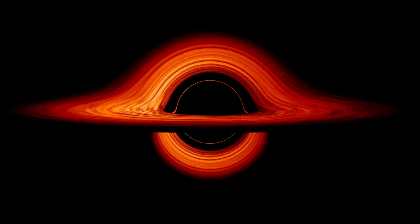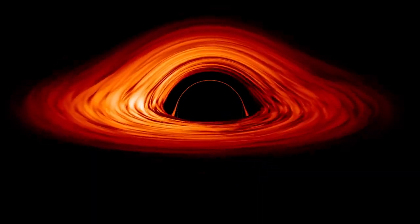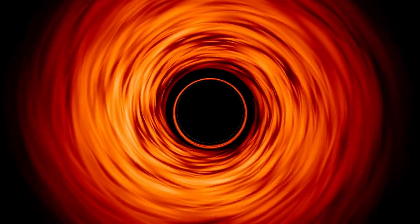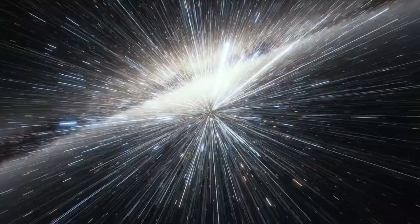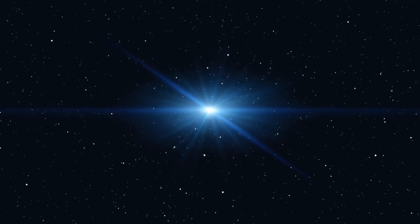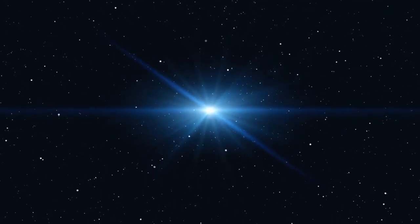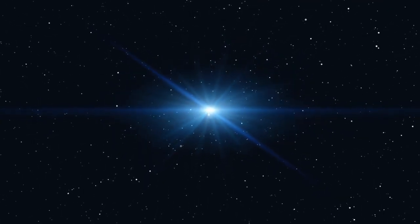What is an accretion disk? Picture a luminous ring of superheated plasma swirling around a black hole. Its glow, so intense, is visible from billions of light years away. This cosmic ballet of heated matter around black holes is known as an accretion disk, and it serves as a brilliant beacon, signaling a black hole's presence in the vast cosmos.